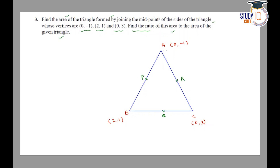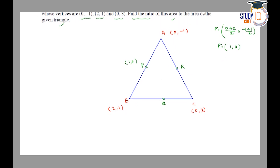So, the coordinates of P will come out to be (1, 0). Similarly, for Q, the x-coordinate will be (2+0)/2 = 1, and y-coordinate will be (1+3)/2 = 2, so Q is (1, 2). Now for R, the x-coordinate is (0+0)/2 = 0, and y-coordinate is (-1+3)/2 = 1, so R is (0, 1). So now we have found P, Q, and R.